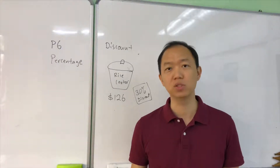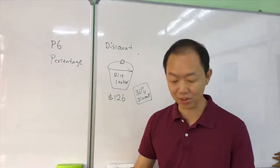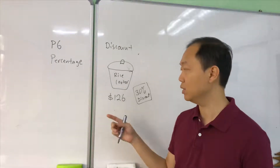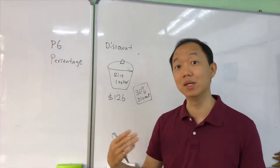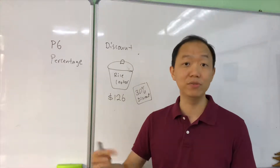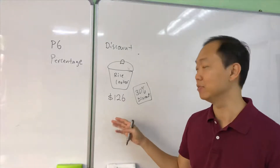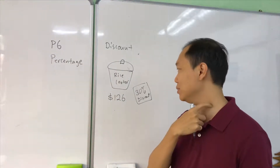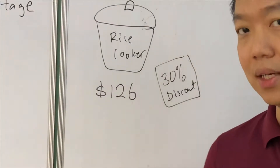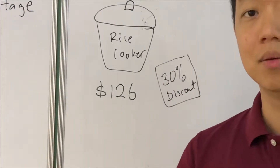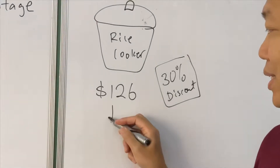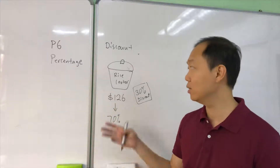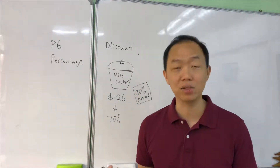Now we're doing the second type of percentage question, which is on discount. The question is: this rice cooker costs $126 after a 30% discount. What is the price of the rice cooker before discount? The information given is $126 after discount. A 30% discount means the $126 is actually 70% of the original price.